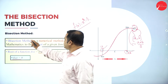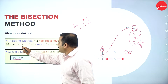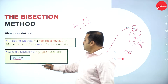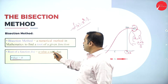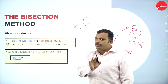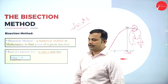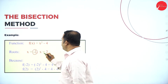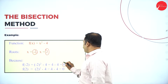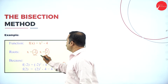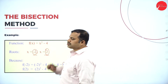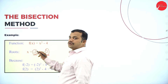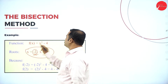The bisection method is a numerical method in mathematics to find out the roots of a given equation or function. The value of A is such that f(A) = 0. When they are equal to zero, we say that the roots are equal. That means the value of x = −2 and x = 2 give f(x) = 0, so these are called the roots of the equation.